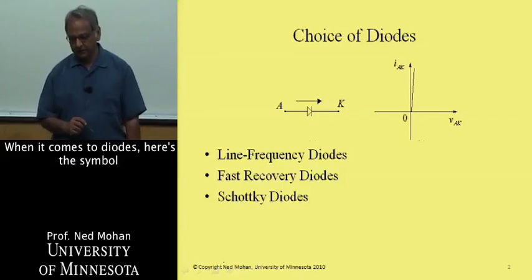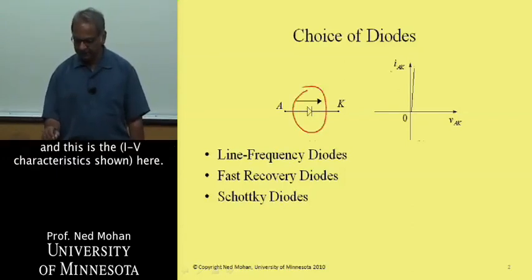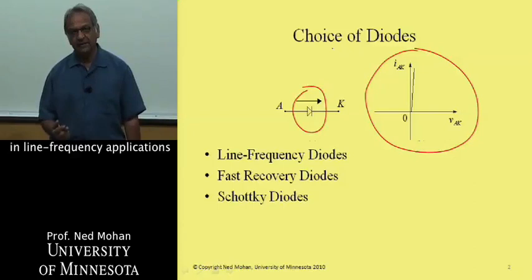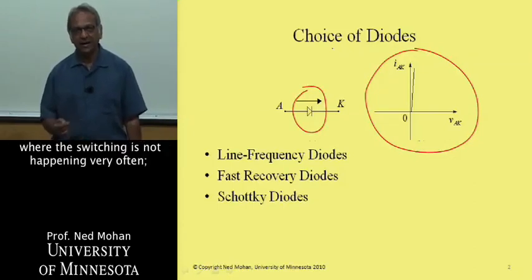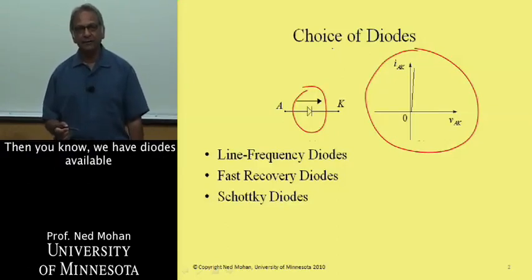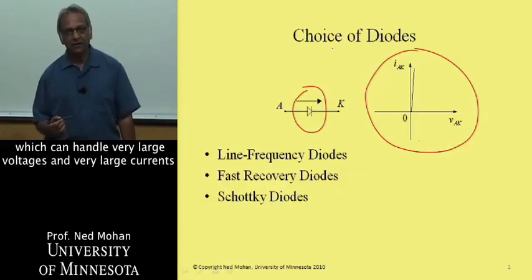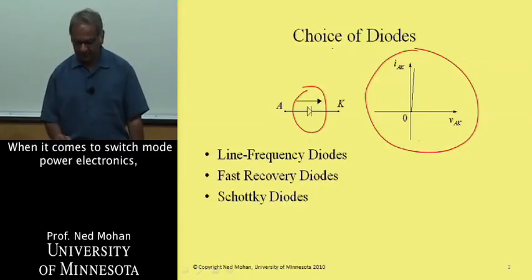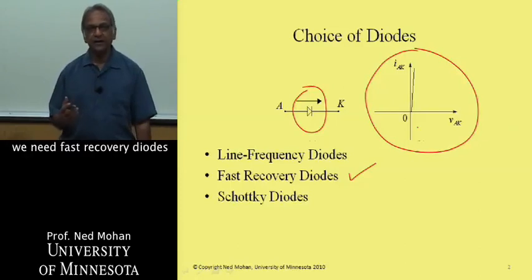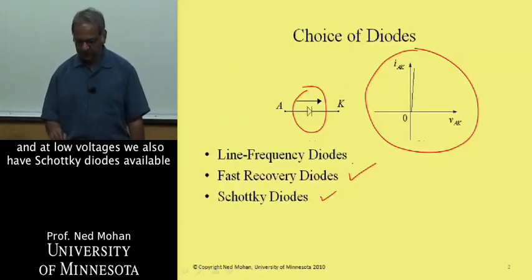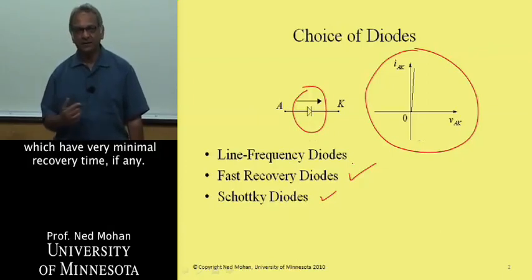When it comes to diodes, here's a symbol and the IV characteristic. There are various types of diodes. In line frequency applications where switching is not happening very often — more or less at line frequency — we have diodes available which can handle very large voltages and very large currents, kilovolts and kiloamps. When it comes to switch mode power electronics, we need fast recovery diodes, and at low voltages we also have Schottky diodes available which have very minimal recovery time, if any.